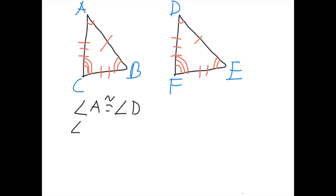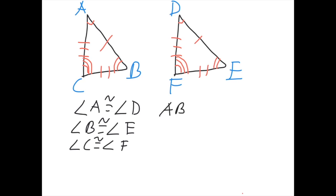Angle B is congruent to angle E, and angle C is congruent to angle F. Then the sides: we know side AB is congruent to side DE.